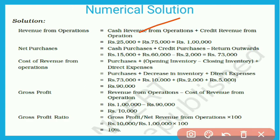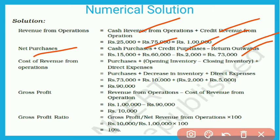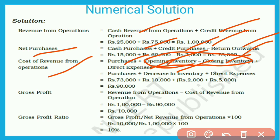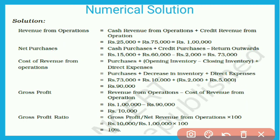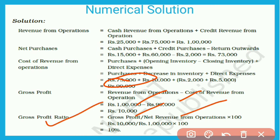Now see the solution. Revenue from Operations = Cash Revenue + Credit Revenue = ₹1,00,000. Net Purchase = Cash Purchase + Credit Purchase − Return Outward = ₹73,000. Cost of Revenue from Operations = Net Purchase + Decrease in Inventory (added to purchase) + Direct Expenses (Carriage Inward + Wages) = ₹90,000. Gross Profit = ₹1,00,000 − ₹90,000 = ₹10,000. Gross Profit Ratio = ₹10,000 ÷ ₹1,00,000 × 100 = 10%.